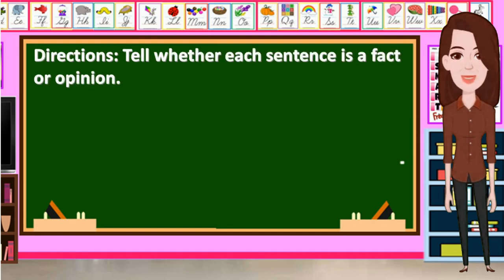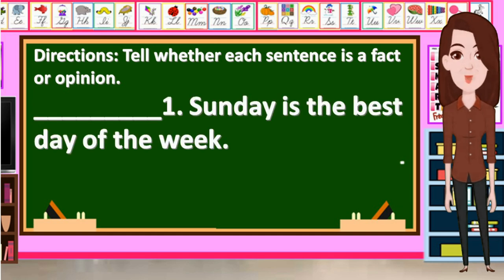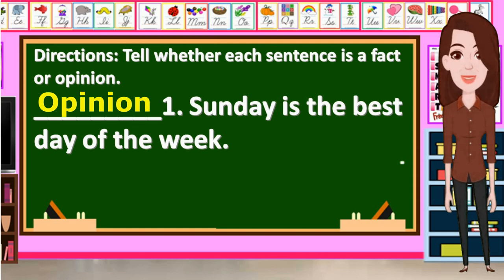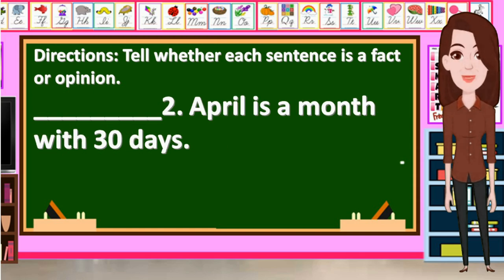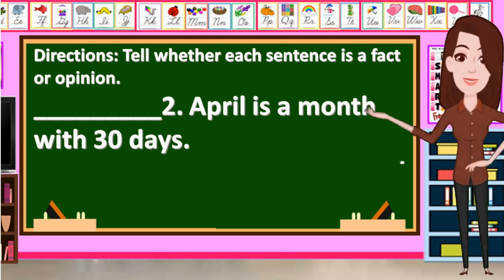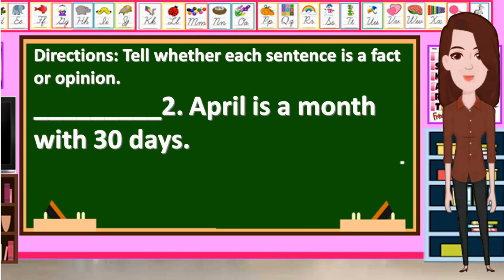Now let us review. Tell whether each sentence is a fact or opinion. Number 1: Sunday is the best day of the week. What do you think is the answer? Correct — the answer is opinion. Number 2: April is a month with 30 days. What is the correct answer? Yes, it is a fact.